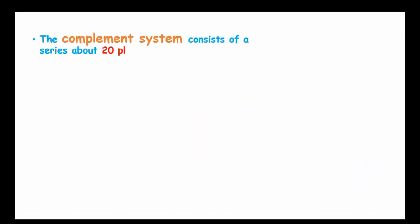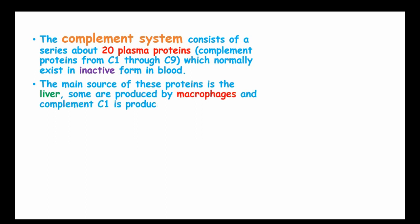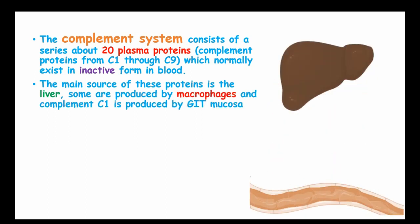The complement system consists of about 20 plasma proteins known as complement proteins. These proteins normally exist in an inactive form in blood. The main source of these proteins is the liver, and some are produced by the macrophages.